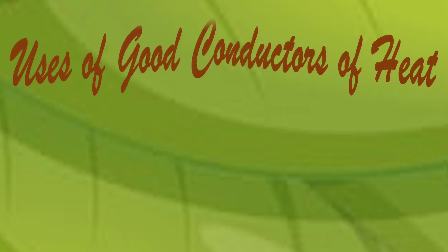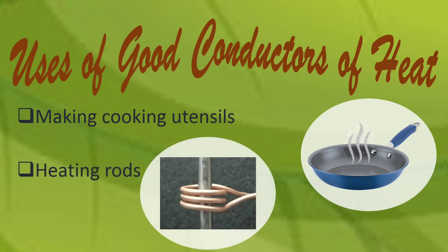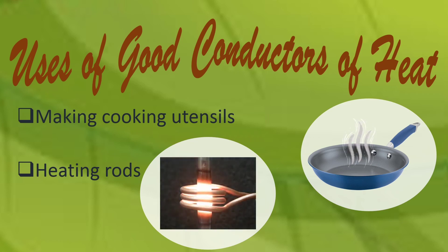Uses of good conductors of heat: The materials which are good conductors of heat are used wherever heat is to be transferred quickly. They are used for making cooking utensils, heating rods, and alloys like brass and stainless steel. Silver is the best conductor of heat.